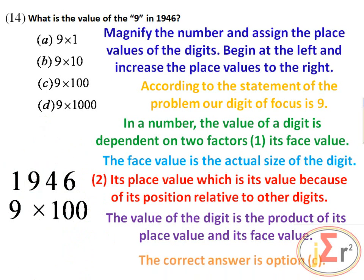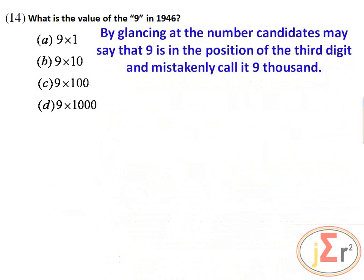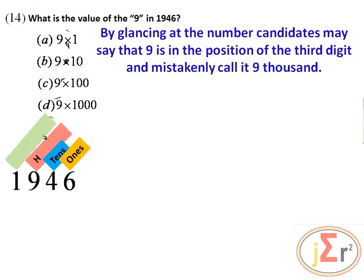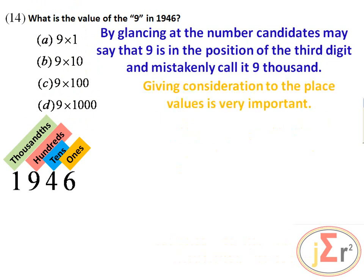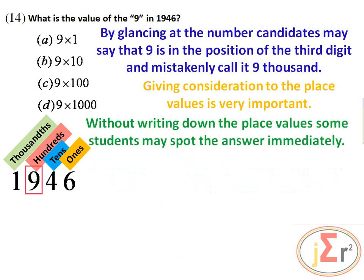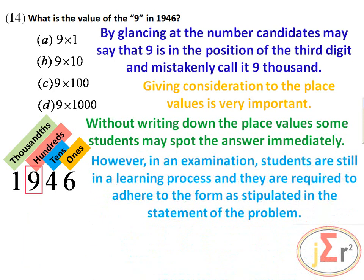The correct answer is option C. By glancing at the number, candidates may mistakenly say that 9 is in the third digit position and call it 9,000. Students may say the 9 is in the thousands position. Giving consideration to place values is very important. Without writing down the place values, some students may spot the answer, but in an examination, students must adhere to the required form.